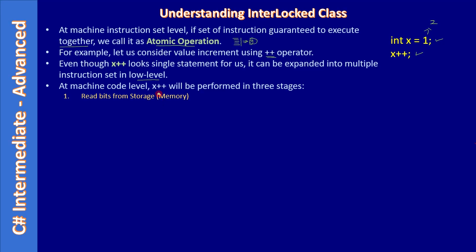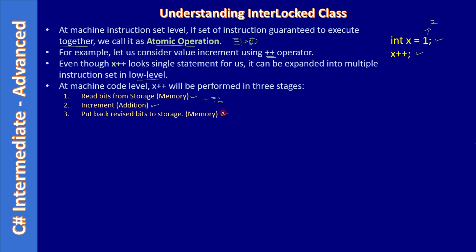First, at the machine level, it reads the bits from the storage location identified by variable x — whatever is stored there, say 1 or 15, that value is read. Second, the actual increment is performed because it's a ++ operator, so the value is incremented by 1. Third, the incremented value is put back to storage as revised bits. So x++ is a combination of three operations: reading the value, performing the addition, then writing back the revised bits.